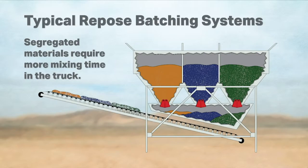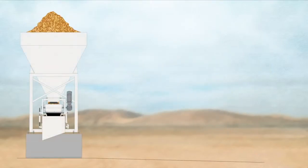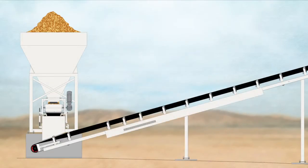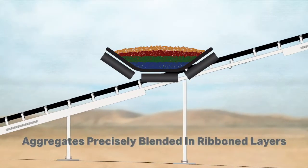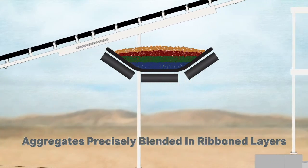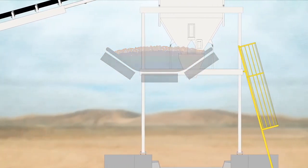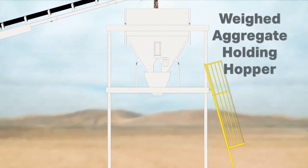Segregated materials require more mixing time in your truck. Aggregates from these bins are precisely blended into ribbon layers, creating great consistency of concrete.